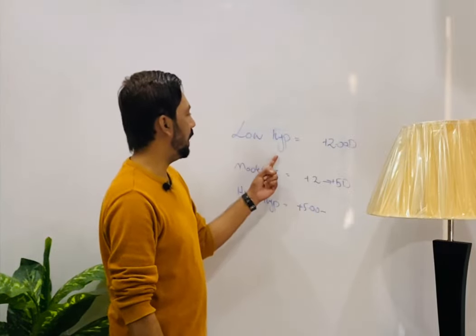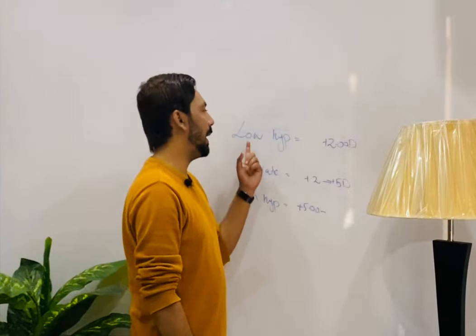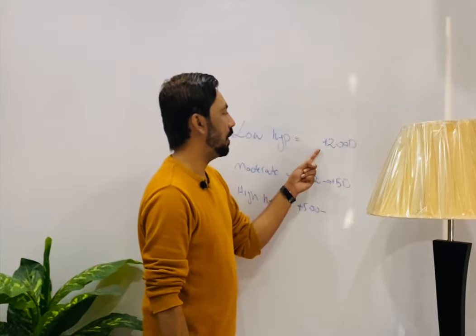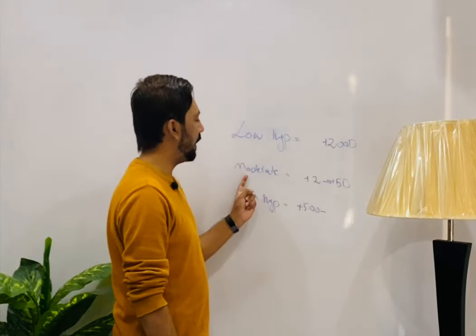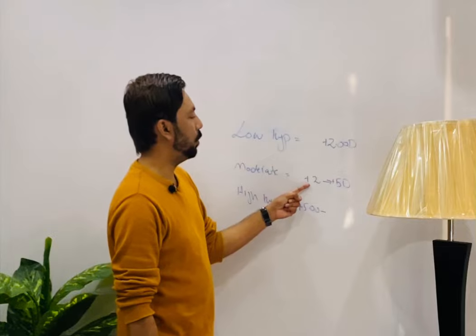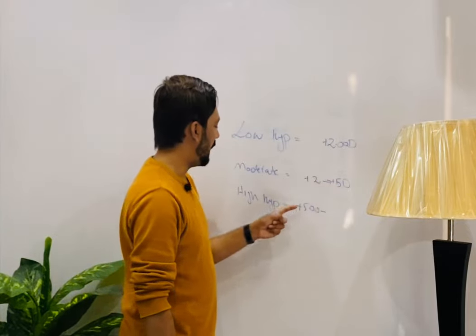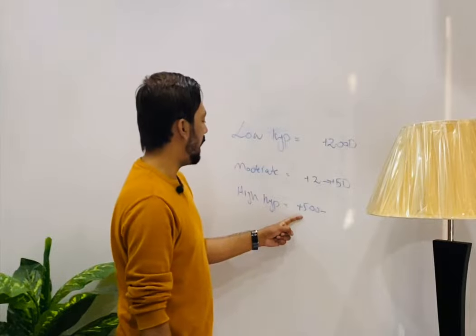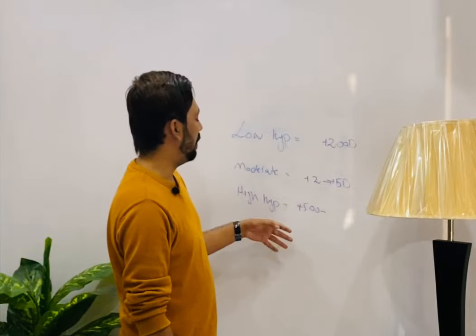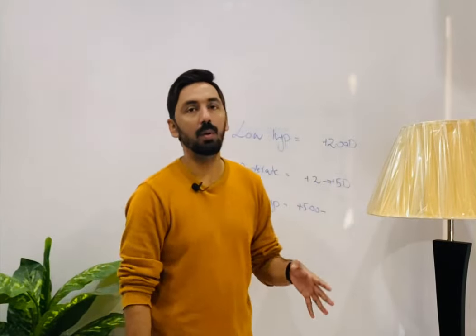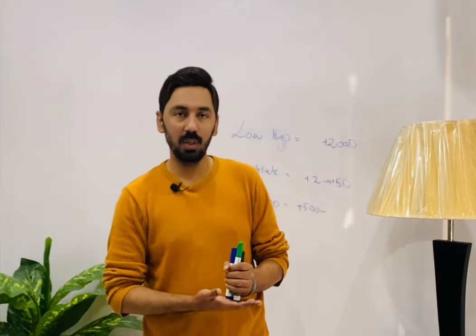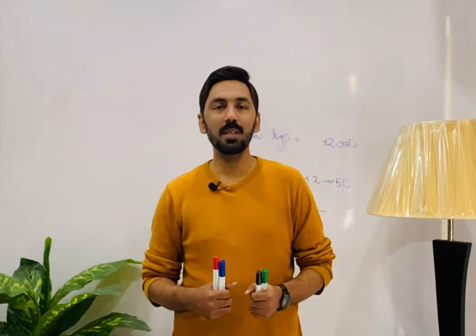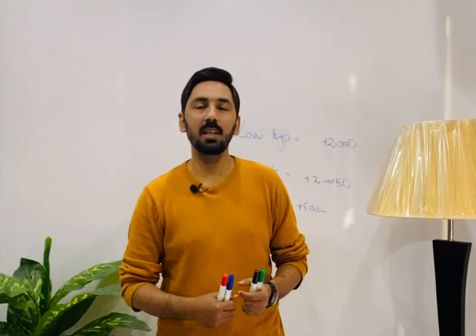To summarize: low hypermetropia is up to plus two diopters, moderate hypermetropia is from plus two to five diopters, and high hypermetropia is plus five and above. These are the different classifications and categories of hypermetropia. Now we will discuss clinical features.